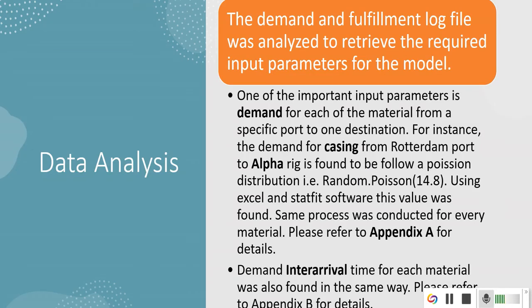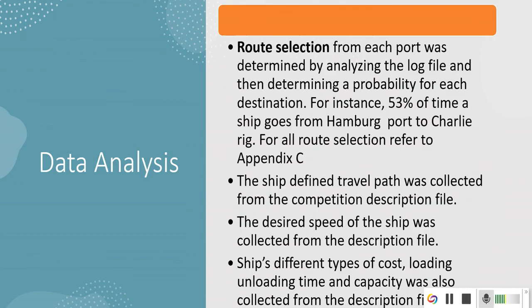From the demand log that was given to the project, it was analyzed to get the demand for each of the materials traveling from one origin port to a specific destination. These are all defined in Appendix A. For example, the demand for casing going to Alpha rig follows a random Poisson distribution, and also the interarrival time which is the frequency for demand for each of the materials found also from the log file. The route selection was done from the log file and is defined in Appendix C. The travel path was from the competition description file and the desired speed was also collected from there.